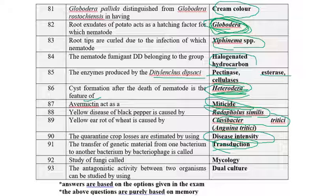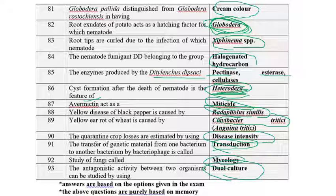Study of fungi is called mycology, study of bacteria is bacteriology, study of viruses is virology, and study of weather factors and parameters in relation to plant disease is called plant disease epidemiology. The antagonistic activity between two organisms can be studied using dual culture technique, which was developed by Dennis and Webster in 1971.